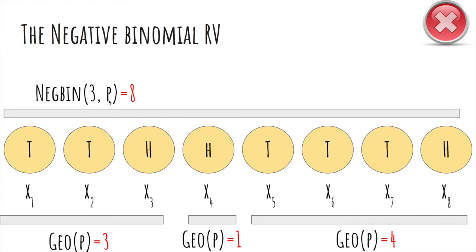Notice that the negative binomial with 3 and p is actually the sum of three geometric random variables. It's a waiting time until the first head, then the second head, and the third head. And this is important for later on.